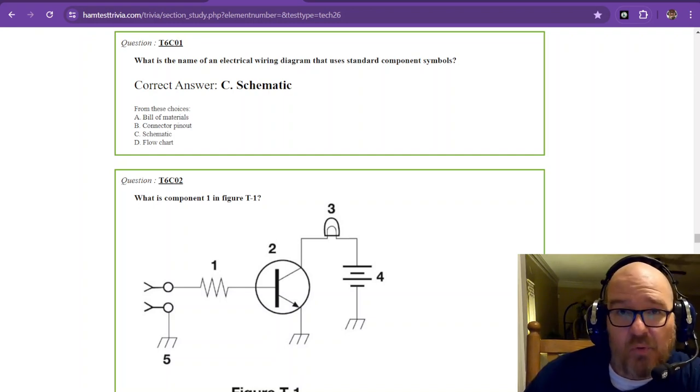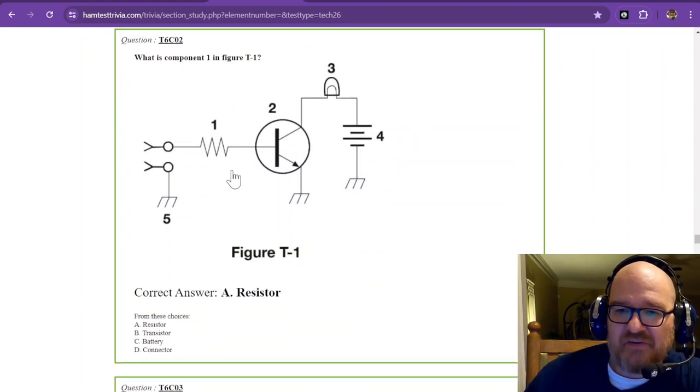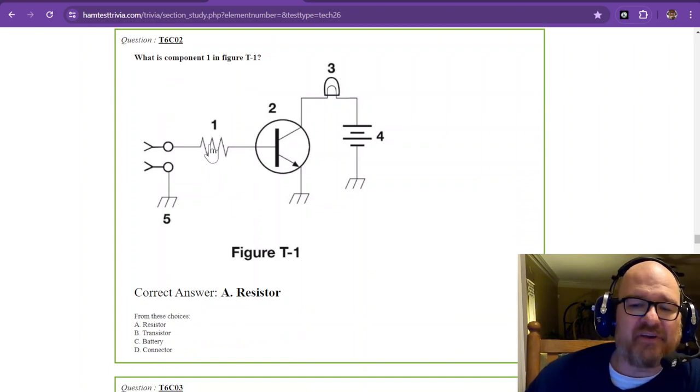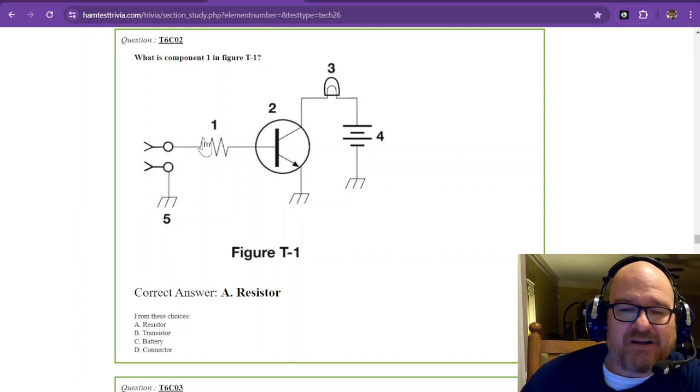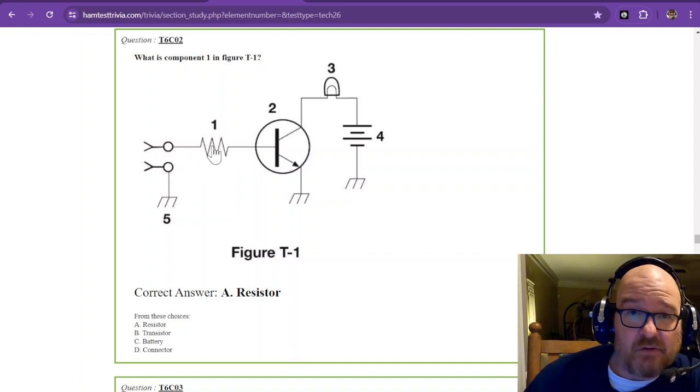And so we have down here in question 2, it's asking us, what is component 1 in figure T1? And this is a resistor. I call it Mr. Squiggles because it's funny. That's the only reason why. But the Squiggles is the resistor.